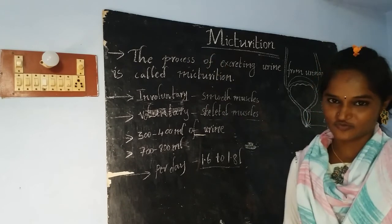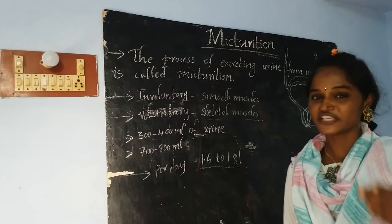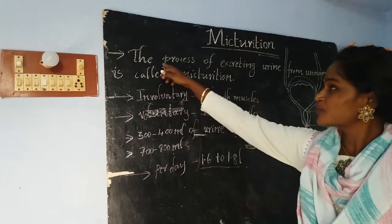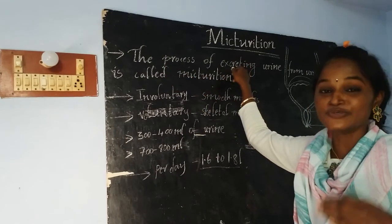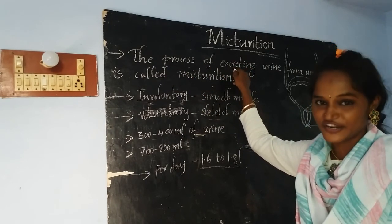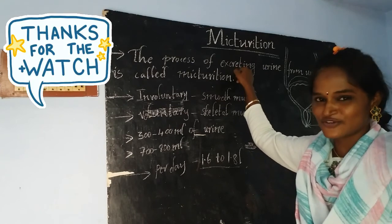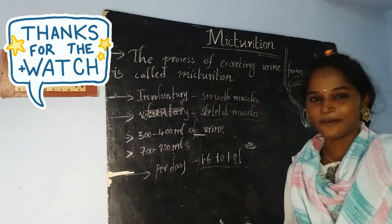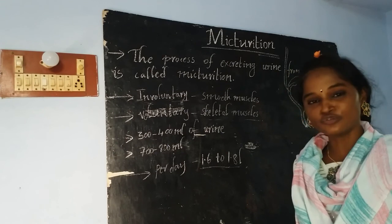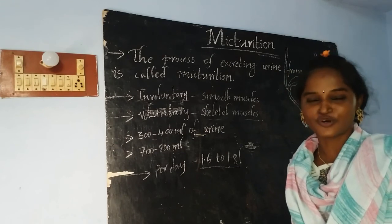This is about micturition. Once again — the definition: the process of excreting urine from the urinary bladder is called as micturition. This is today's class. I will meet you tomorrow with another new topic.